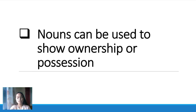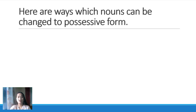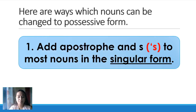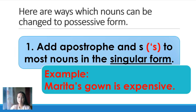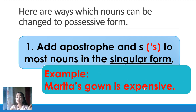Here are ways by which nouns can be changed to possessive forms. First, add apostrophe and S to most nouns in singular form. Singular form means single. Example: Marita is a single noun, singular form, so we add apostrophe and S. 'Marita's gown is expensive.' It shows ownership — who is the owner of the gown? Marita.